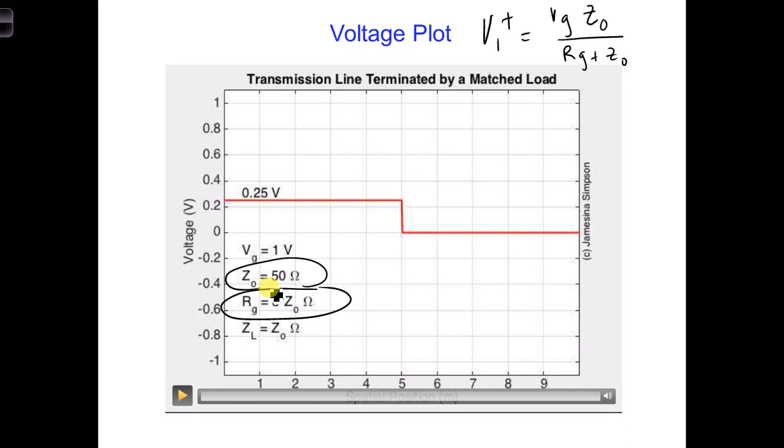Now what about the current? What is the amplitude of the initial current flowing along the transmission line? Does it have the same shape as the voltage wave?